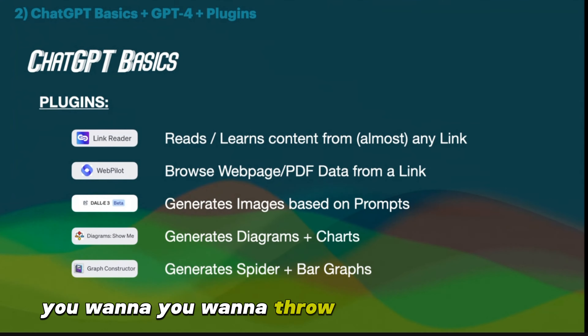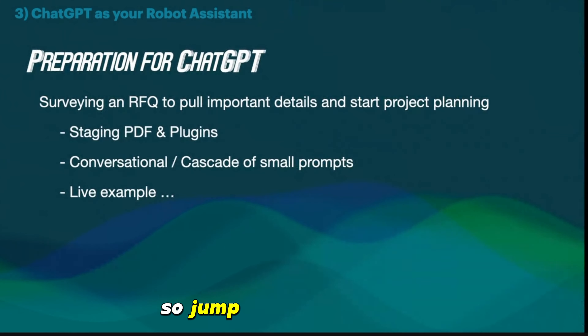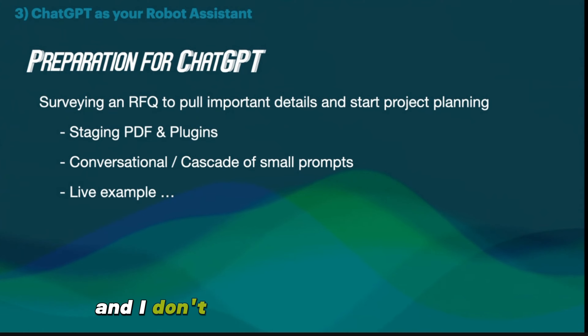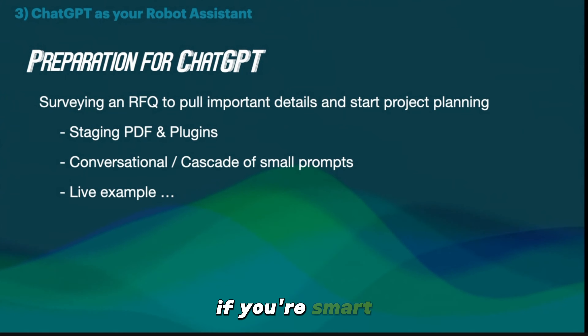We are about to transition to the good stuff. But before we get there, a quick overview: staging a bid project first, then writing a proposal — that's how the process goes. You don't just start writing; you have to stage it and take in all of the RFQ data. So step right in — preparing. You're surveying an RFQ to pull the important details and start project planning. Maybe you have a Word document or spreadsheet with a checklist going, or a library that automates the process a bit.